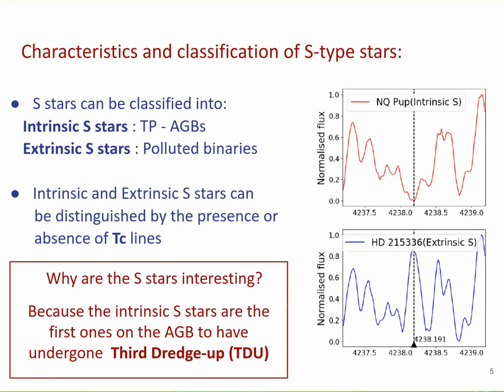The presence of technetium tells you that the star is a genuine AGB star undergoing AGB nucleosynthesis. The absence of technetium features is a sign that the star is enhanced with S-process elements because of binary interaction and is not an AGB star itself. Hence, these S-stars are very interesting to understand the AGB nucleosynthesis and the S-process.